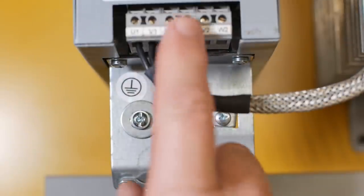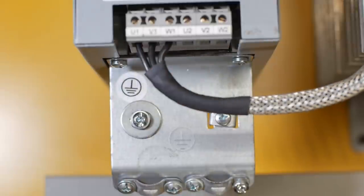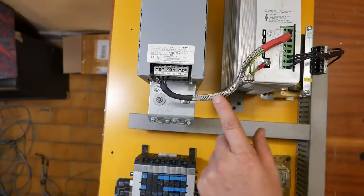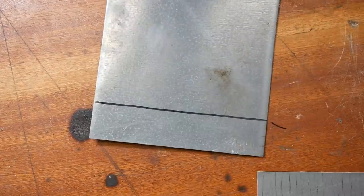Now ideally this braid would have come down and been clamped in here, but I've made it too short and I don't really want to change it. I was told to connect the shielding to this bracket as well. So let's make a bracket.